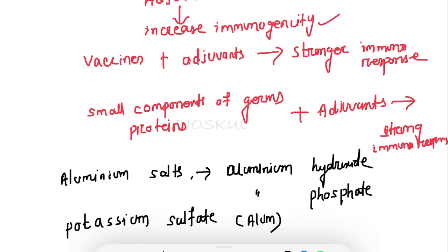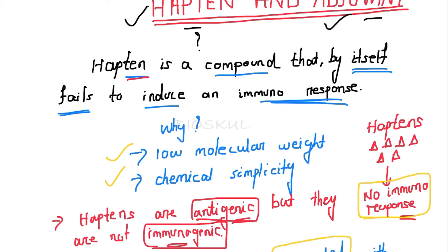Examples of adjuvants include aluminum salts such as aluminum hydroxide, aluminum phosphate, and potassium sulfate, which are collectively known as alum. Hope you liked this video and the concepts of hapten and adjuvant are now clear. See you in the next session — keep learning and don't forget to subscribe to the channel.